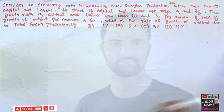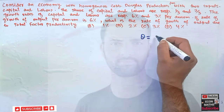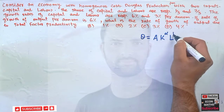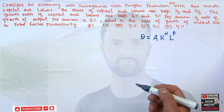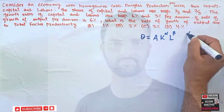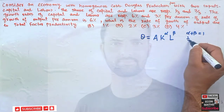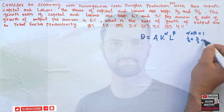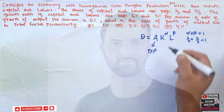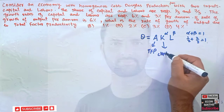Our typical Cobb-Douglas production function is given as Q = A · K^α · L^β, or equivalently L^(1−α). We are told it is a homogeneous Cobb-Douglas production function, meaning α + β = 1. Indeed, α = 1/3 and β = 2/3 sum to 1. Here, A is our total factor productivity and K is capital.